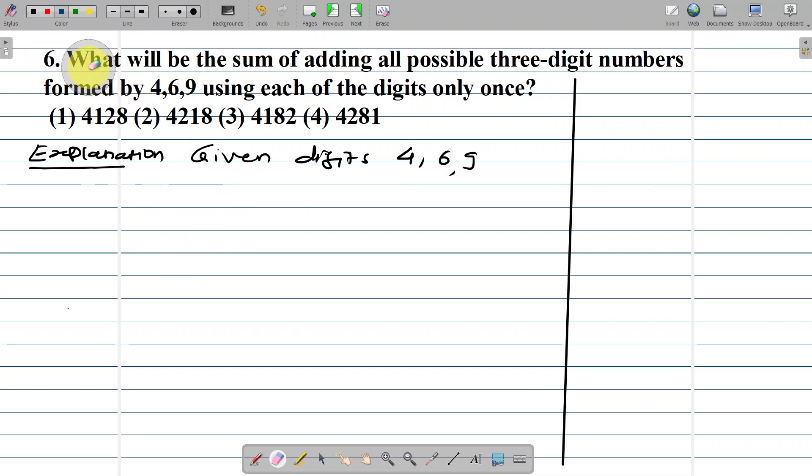Example number six: What will be the sum of adding all possible three-digit numbers formed by 4, 6, 9, using each of the digits only once? Option number one: 4128. Option number two: 4218. Option number three: 4182. Option number four: 4281.